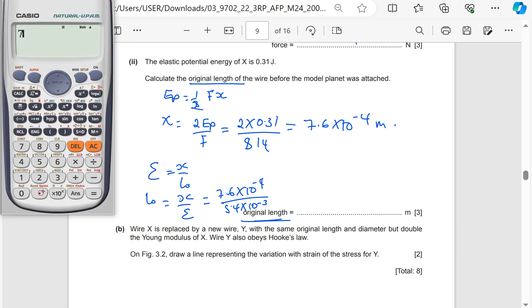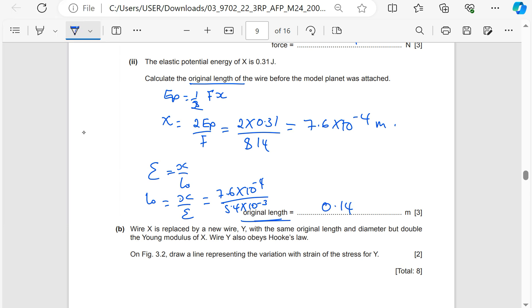So 7.6 exponent minus 4 divided by 5.4 exponent minus 3, which gives us the original length as 0.14. So the answer here is supposed to be 0.14 meters. Note, this is not the answer to this part. So sorry for that.